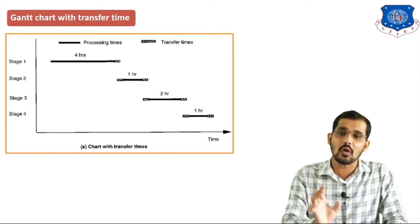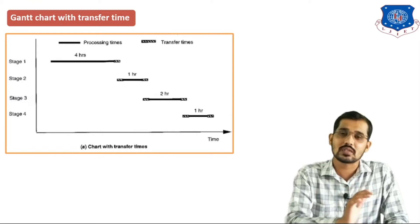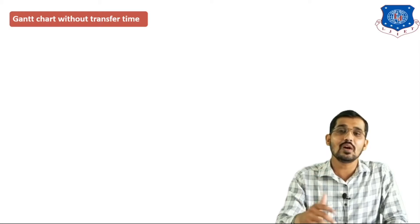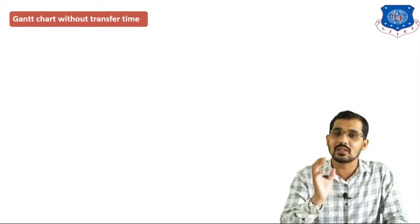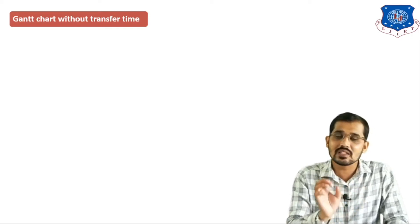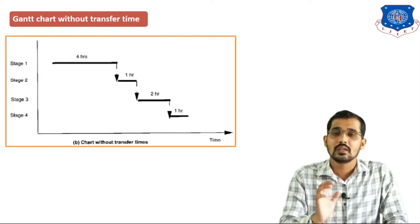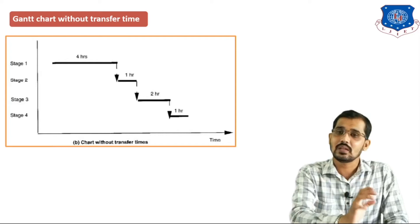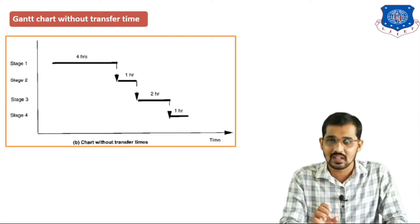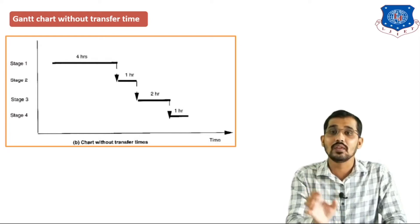In this manner we can draw the Gantt chart, where we draw number of stages against processing time or transfer time. Now we will see the Gantt chart without transfer time. Transfer time is the time required to transfer material from one stage to another, shown as a dotted line. In the Gantt chart without transfer time, we draw number of stages against processing time only, without those dotted lines.